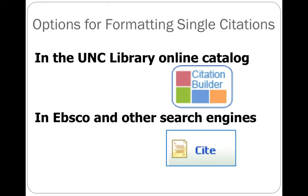I'm going to go over just a few ways that you can format a single citation on the fly, and we're going to be getting into the more comprehensive citation management programs in the next two tutorials. But for now, first we're going to see what we can do from the UNC Library Catalog and then from an EBSCO database.